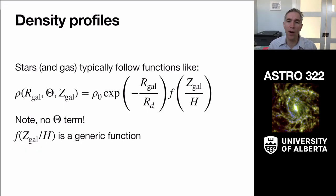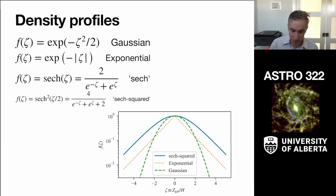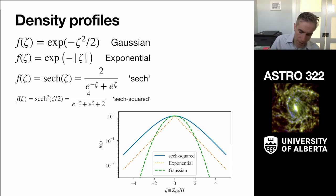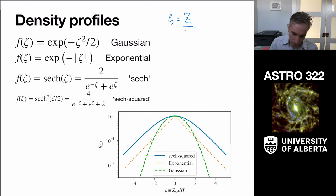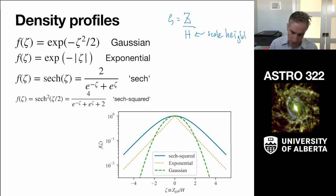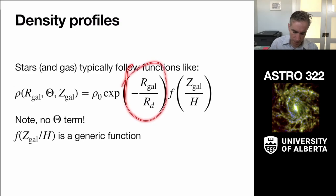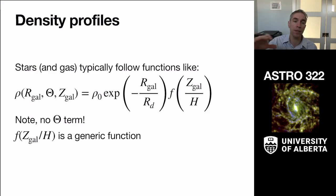The literature uses a bunch of different functions for the vertical profile. We define zeta as a dimensionless height — the actual distance above the plane divided by the scale height h. There's also a scale length rd for the radial term. Everything is non-dimensionalized to a characteristic scale of the system. The scale height describes the disk thickness, and like the atmosphere on Earth, there's no concrete upper barrier — just a scale height.